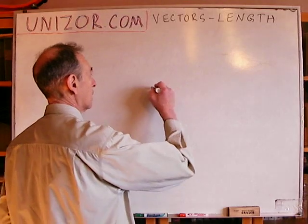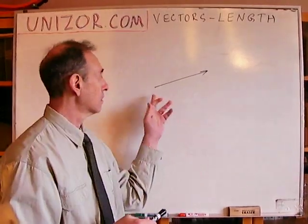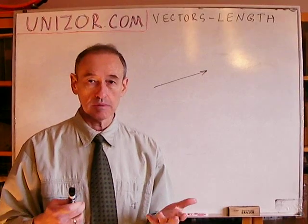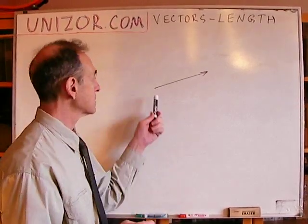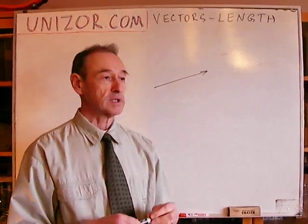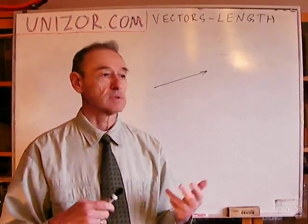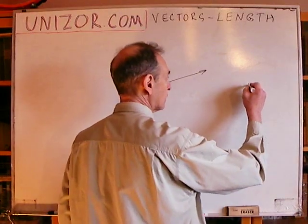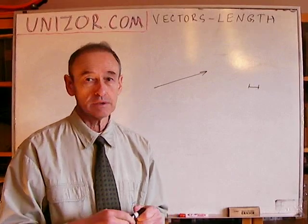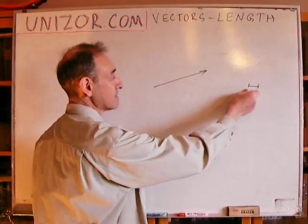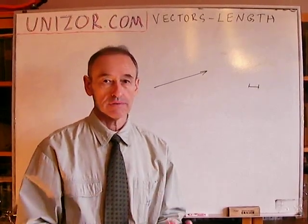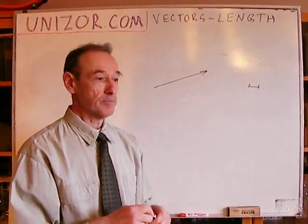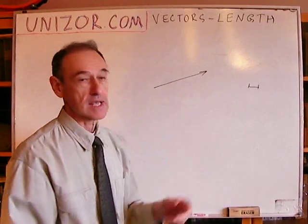If a vector is represented graphically, like this particular arrow-headed segment, the length must be measured in certain units. For instance, this particular vector represents a speed. Speed can be measured in meters per second, or miles per hour, or whatever else. Somewhere we should have a unit of length which is equal to, let's say, one meter per second. Then, depending on the length in these units, this geometric representation of the vector has a certain length, like 5.7, for instance. It means the speed is 5.7 meters per second.